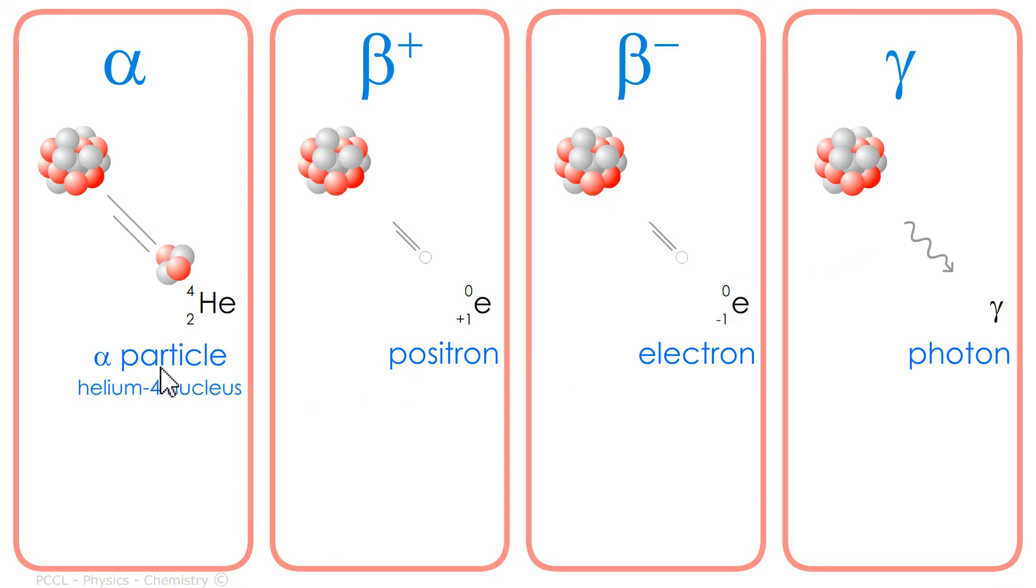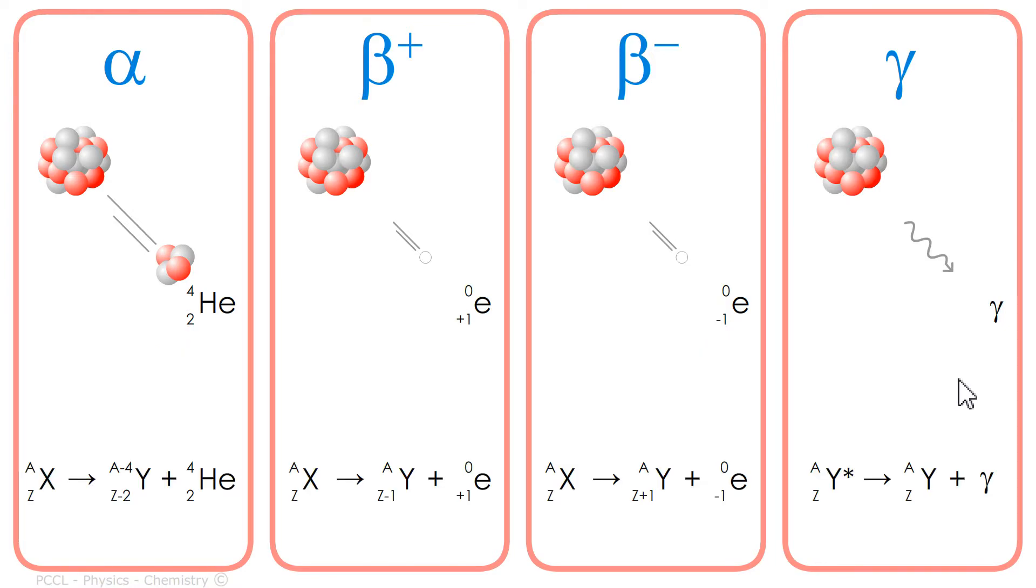Alpha particle. Positron. Electron. Photon. Learn the vocabulary. You must also know how to recognize equations.